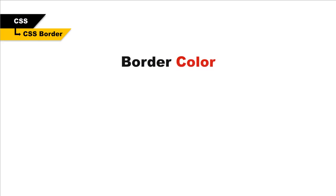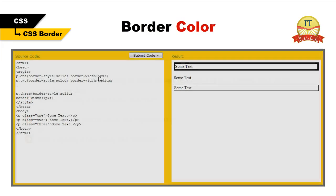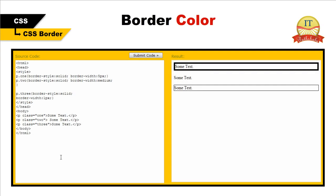Border color. The border-color property is used to set the color of the border. The color can be set by specifying a color name, a RGB value, or a hex value. You can also set the border color to transparent. Let us look at an example to understand it.